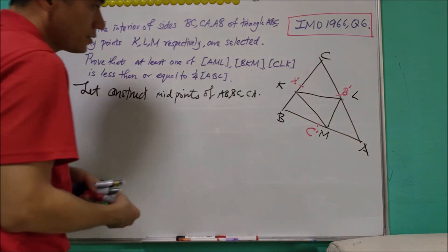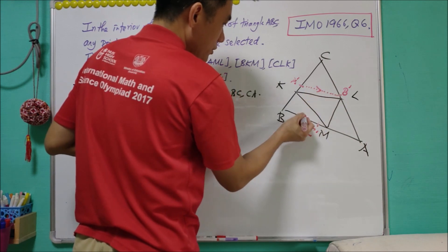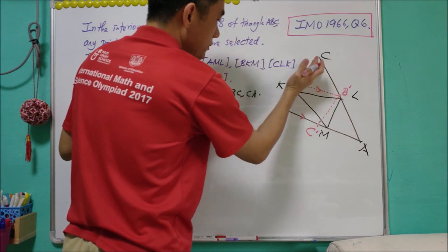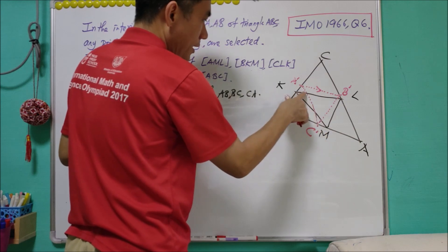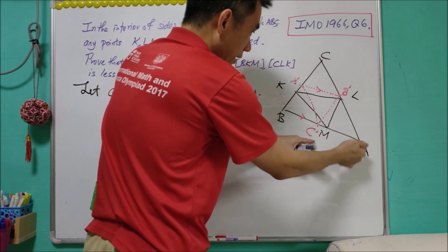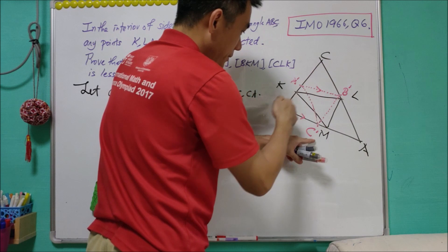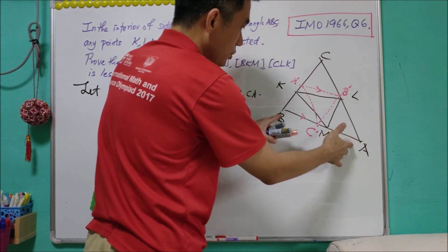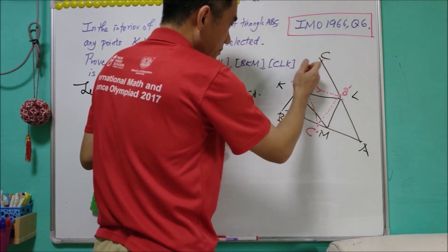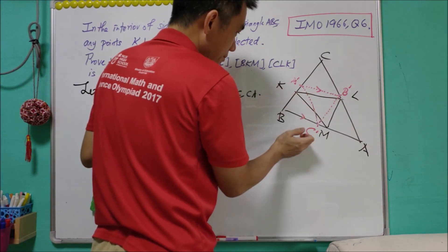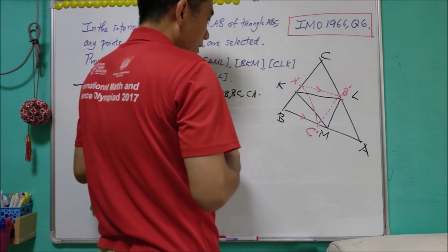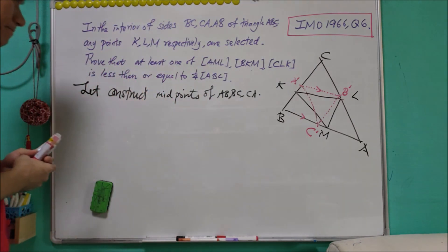Joining these midpoints, A prime B prime is parallel to AB, likewise parallel to BC, and A prime C prime is parallel to CA. Note that triangle AB prime C prime is similar to triangle ACB with ratio one to two. Each of the triangles AB prime C prime, CA prime B prime, BA prime C prime, and A prime B prime C prime has exactly a quarter of the area of triangle ABC.